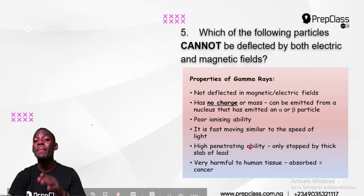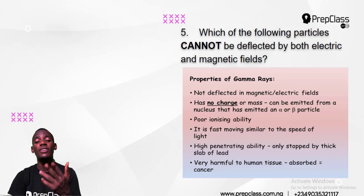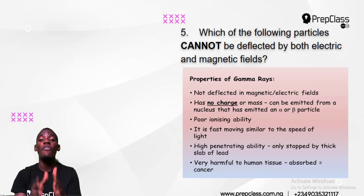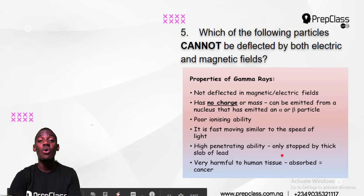Gamma ray has high penetrating ability — it can penetrate more than alpha and beta. It can penetrate paper, aluminum, and even lead. It can only be stopped by thick lead. It has high penetrating power. These are the properties of gamma ray. It is very harmful to human tissue — when absorbed, it can cause cancer. So the answer is gamma ray — it is non-deflected by any magnetic or electric field.